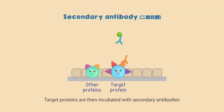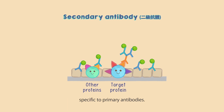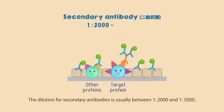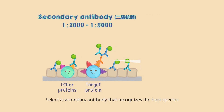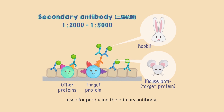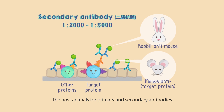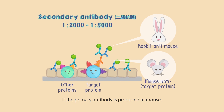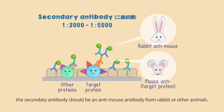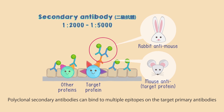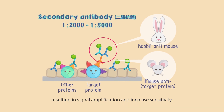Target proteins are then incubated with secondary antibodies specific to the primary antibodies. The dilution for secondary antibodies is usually between 1 to 2,000 and 1 to 5,000. Select a secondary antibody that recognizes the host species used for producing the primary antibody; the host animals for primary and secondary antibodies should be different to increase specificity. For example, if the primary antibody is produced in mouse, the secondary antibody should be an anti-mouse antibody from rabbit or other animals. Polyclonal secondary antibodies can bind to multiple epitopes on the primary antibodies, resulting in signal amplification and increased sensitivity.